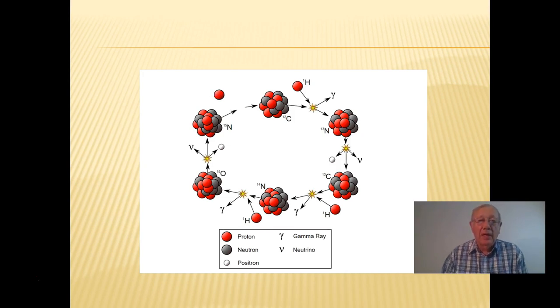That again can undergo a collision with a proton and form the helium. So this is the cycle. It involves, as you can see, these protons colliding in various ways and the formation of carbon, nitrogen, and oxygen, but we end up here back with carbon and the cycle then can repeat itself.